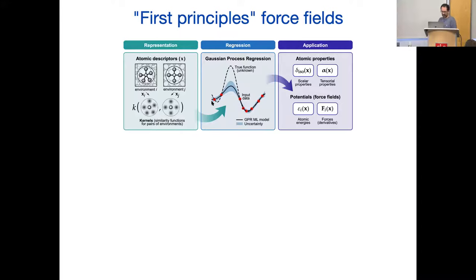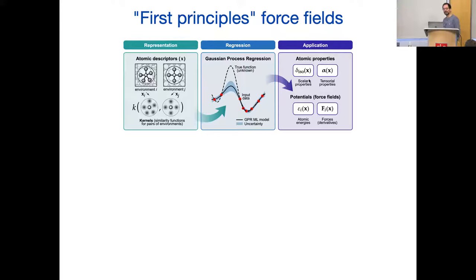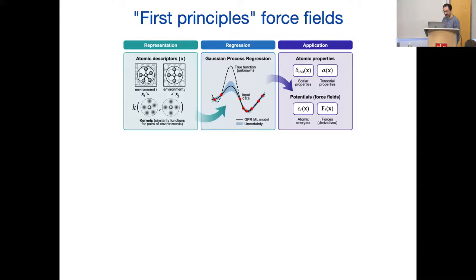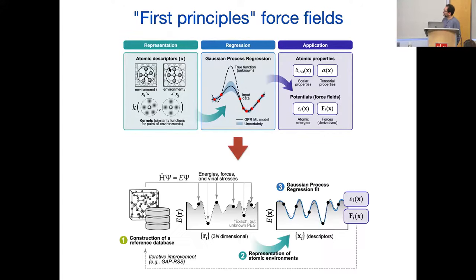Half of machine learning methods are regression — where you have labels, you're doing regression. We started using Gaussian processes, neural networks, and linear regression also works. Once you have that, you get yourself some target function: atomic energies, forces, or something else — chemical shifts on an atom depending on its environment, tensorial properties like polarizability. Anything one can compute quantum mechanically can be regressed as a function of the neighbor environment.